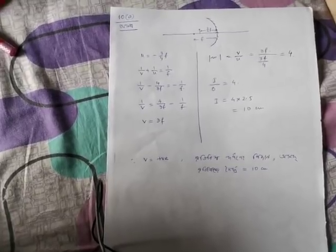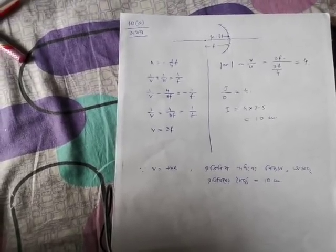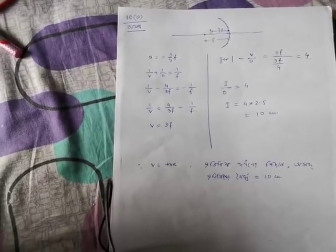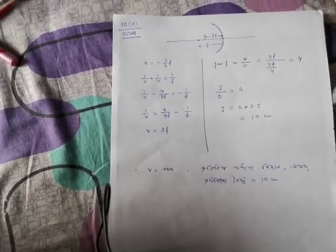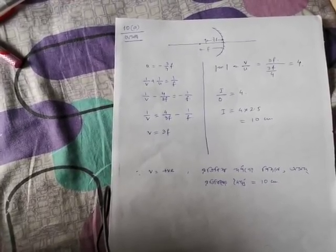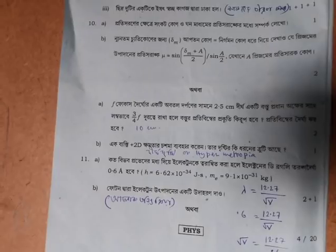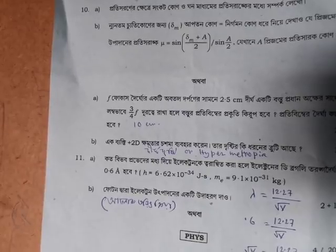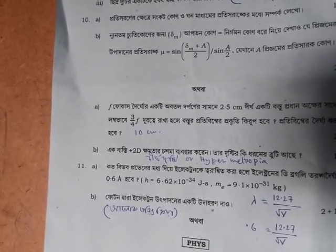The answer is u is equal to 3 by 4F. It is 1 by 2F. It is 2F. If the answer is positive, it is less than 20. The answer is the formula — it is 10cm. This is the problem with hypermetropia.